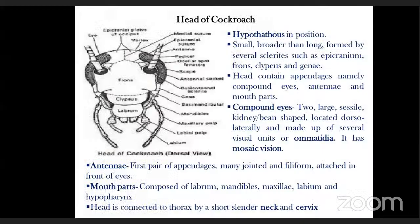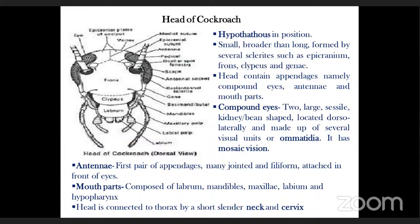The head is small, broader than long, and formed of several sclerites: epicranium (the protective region above the brain), frons, clypeus, and gena. The head contains appendages namely compound eyes, antennae, and mouthparts. Compound eyes are two large, kidney- or bean-shaped eyes on the dorsolateral position, made up of several visual units called ommatidia, each forming a separate image. The head is connected to the thorax by a short, slender neck called the cervix.